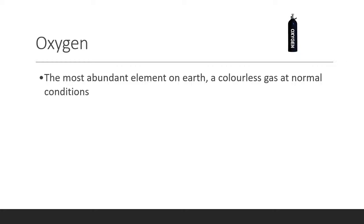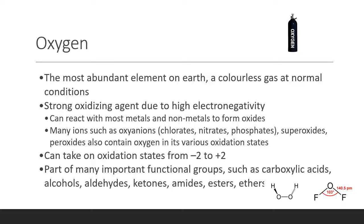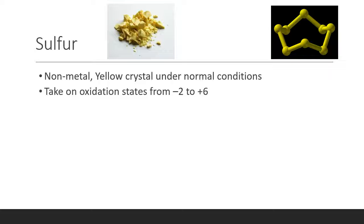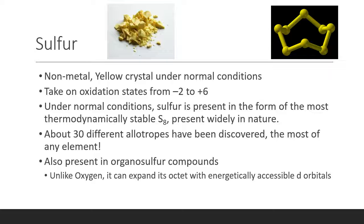Now let's go through the individual properties of the chalcogens. Oxygen is the most abundant element on earth, a colorless gas at normal conditions. It is a strong oxidizing agent due to its high electronegativity, and it takes on oxidation states from minus 2 in water to plus 2 in oxygen difluoride, and is also part of many important organic functional groups. Sulfur is a non-metal, a yellow crystal under normal conditions, forming S8. However, about 30 different allotropes of sulfur exist, the most of any element. It is also present in organosulfur compounds, and unlike oxygen, it can expand its octet using its d-orbital.